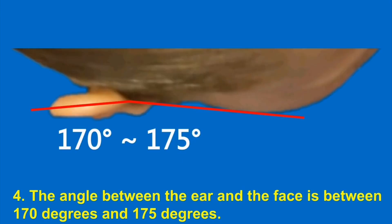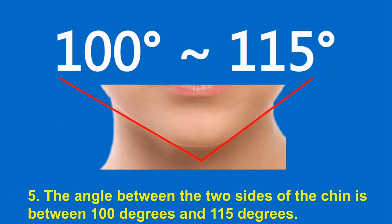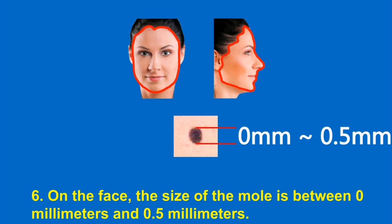4. The angle between the ear and the face is between 170 degrees and 175 degrees. 5. The angle between the two sides of the chin is between 100 degrees and 115 degrees. 6. On the face, the size of the mole is between 0 millimeters and 0.5 millimeters.